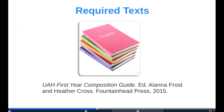There is a required textbook for this course: the UAH First Year Composition Guide, edited by Alana Frost and Heather Cross, both faculty members in the Department of English. This textbook is available at the campus bookstore over in Charger Union. There are also a small number of outside readings that I will be providing to you either as PDFs or as links to where those readings are accessible online. This textbook is used not just for EH101 but also for EH102, so more than likely you'll be able to use it again past this semester.